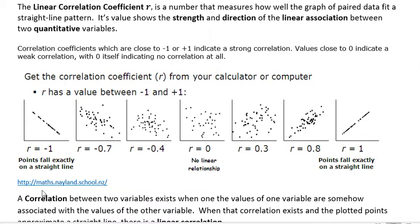Here's a picture from maths.neland.school.nz. You can see where R equals negative one, the points fall exactly on a straight line with negative correlation, meaning when one value is small the other is high. When that same value gets larger, the other gets smaller. At negative 0.7, there's a downward trend that looks somewhat linear, but the dots definitely don't fall completely on the line.